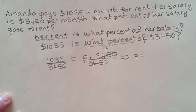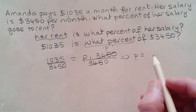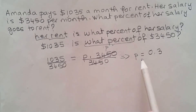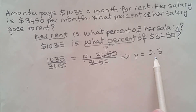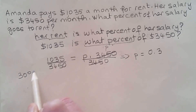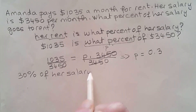P would be equal to — you can use your calculator here. Divide 1,035 by 3,450 and you should get 0.3. Now what percent is that? Remember this is the decimal form — we want to change it to percent. So that's 30%. You multiply by 100%, that's 30%. So 30% of her salary goes to rent.